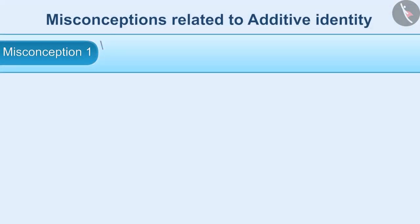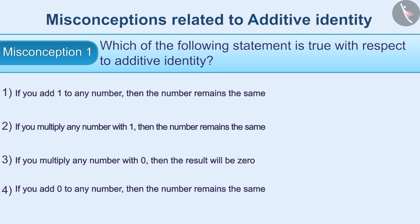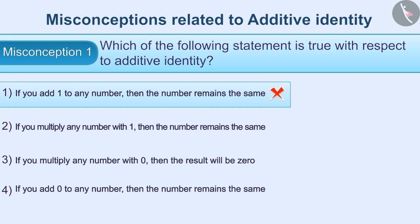Misconception 1: Which of the following statements is true with respect to additive identity? If you add 1 to any number, then the number remains the same — this is a misunderstanding. When 1 is added to a number, its value increases. Therefore, option 1 is an incorrect answer.